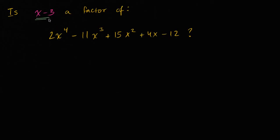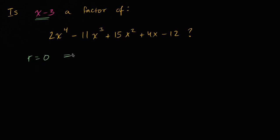We're asked: is the expression (x minus 3) a factor of this fourth-degree polynomial? You could solve this by doing algebraic long division — by taking this polynomial and dividing it by (x minus 3) and figuring out if you have a remainder. If you do end up with a remainder, then this is not a factor. But if you don't have a remainder, then this divides fully into it, which means it is a factor. So the remainder is equal to zero if and only if it's a factor.